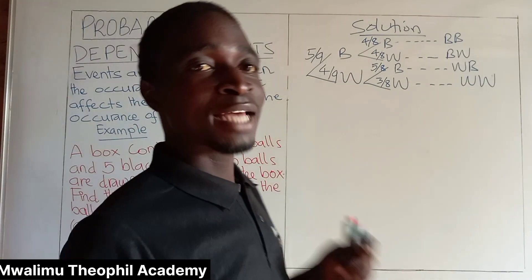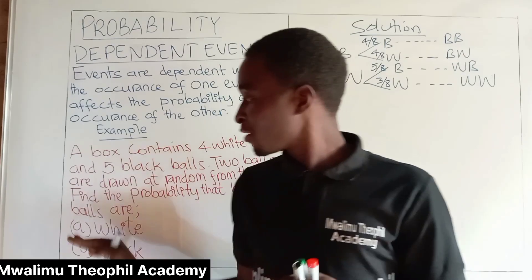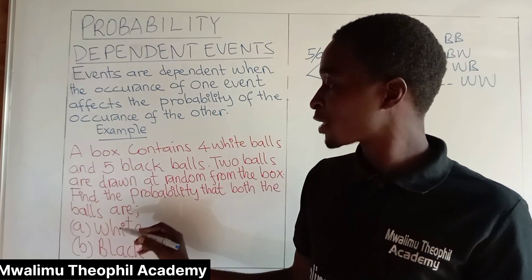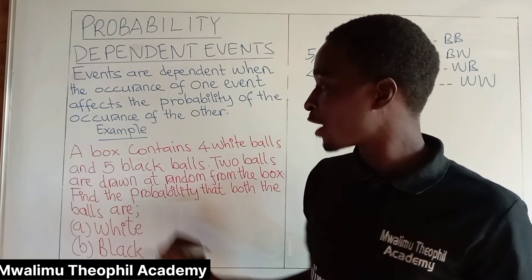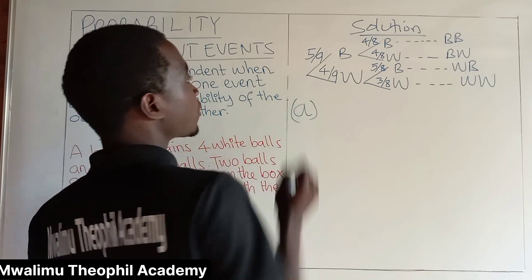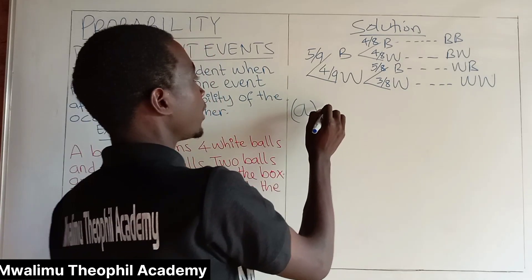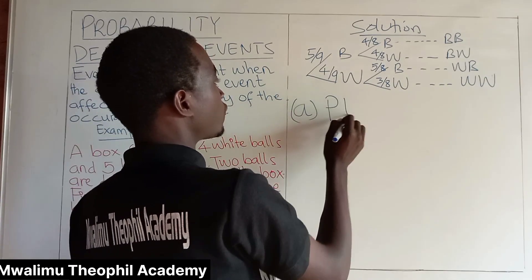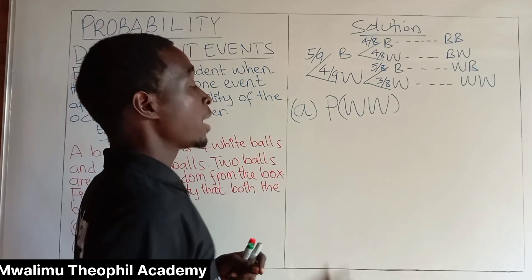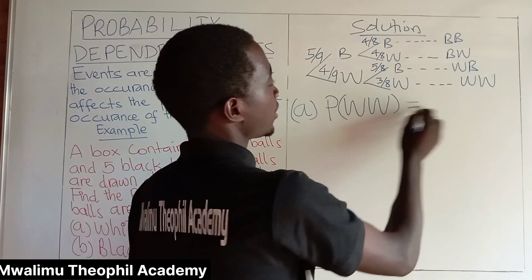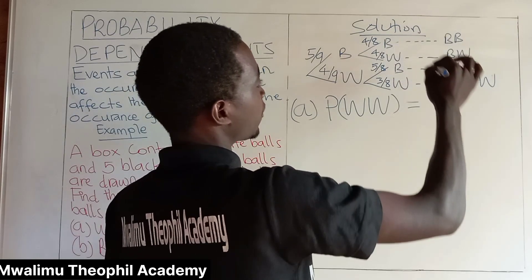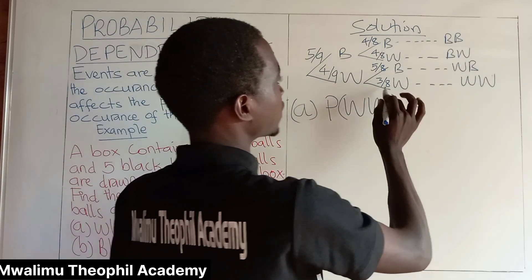Now let us start dealing with the asked questions. Part A: we are asked to find the probability that both two balls are white. The probability of white, white will be calculated by using the line where we obtained white, white.